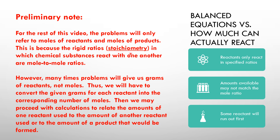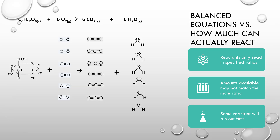That's because chemical substances react in rigid ratios — that's what we call stoichiometry: reacting in rigid ratios. But those rigid ratios are mole-to-mole ratios. However, problems will often not give us moles of reactants; they'll give us grams of reactants, and then we're going to have to convert them to moles before we can do the rest of the calculations.